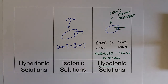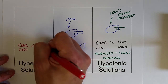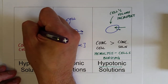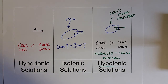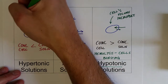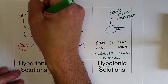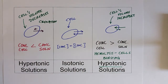In the last scenario, the solute concentration is greater outside the cell than inside. Water preferentially leaves the cell to move toward the higher concentration, at a greater rate than it enters, causing the cell's volume to decrease. The cell can actually shrivel up, and that process is called crenation.